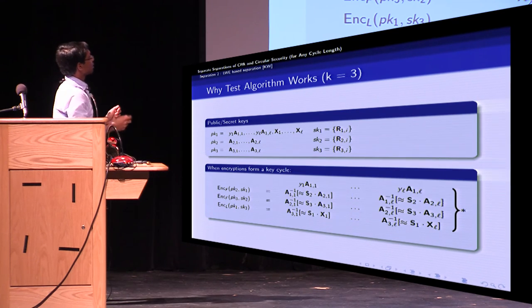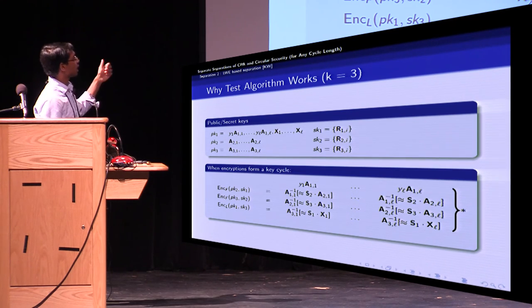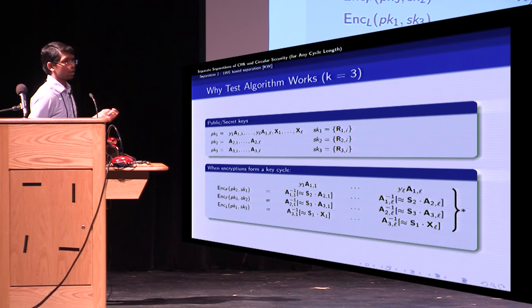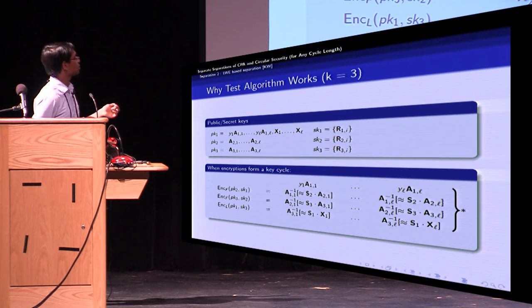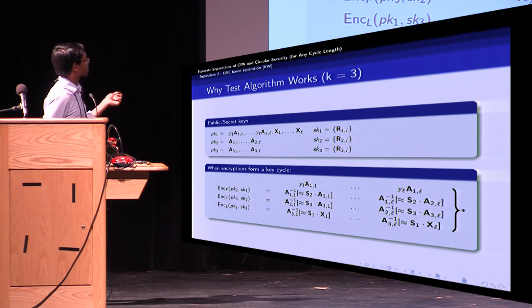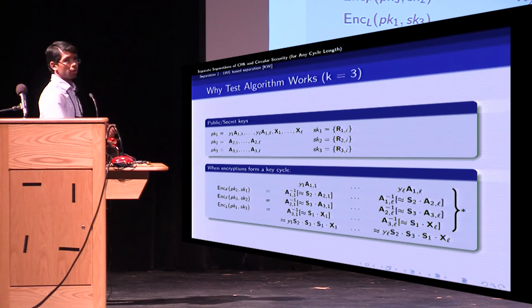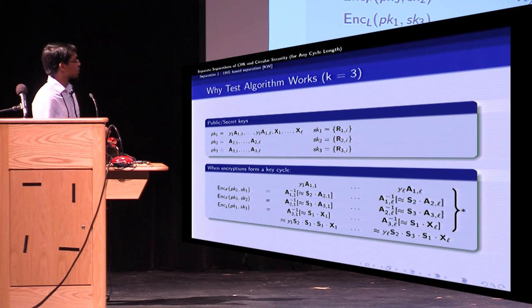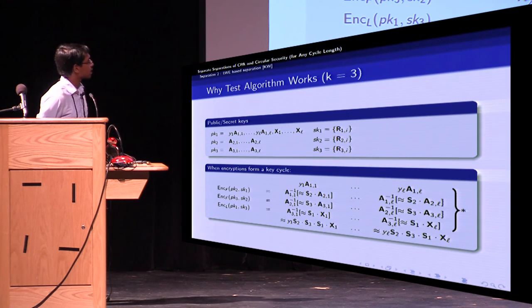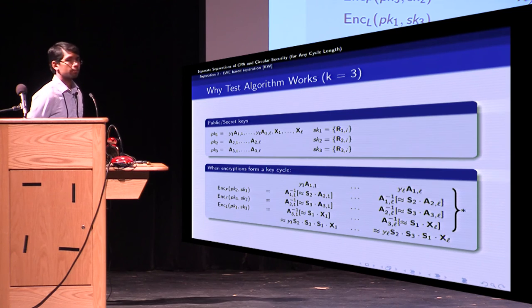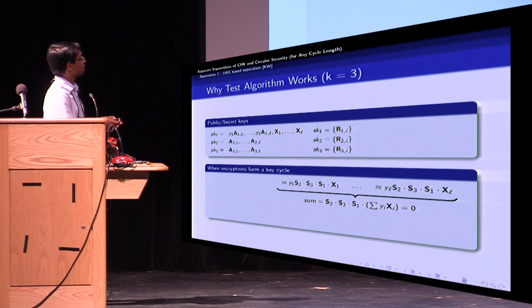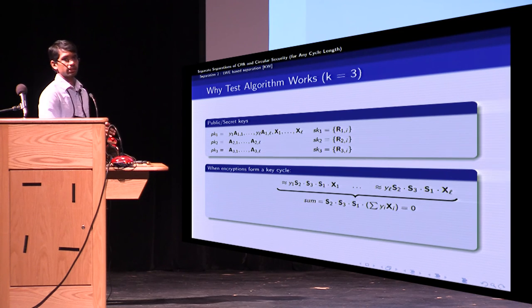So now if you multiply each column, let's look at the first column. Then if you multiply the first two terms, you get Y_1 times S_2 times A_2i. Then multiply that with the third term, you get Y_1 times S_2 S_3 times A_3i. And then if you multiply all of them, you get Y_1 times S_2 S_3 S_1 times X_1 and so on, Y_L times S_2 S_3 S_1 times X_i. So if you sum these all up, the sum is close to zero because summation Y_i times X_i is zero.